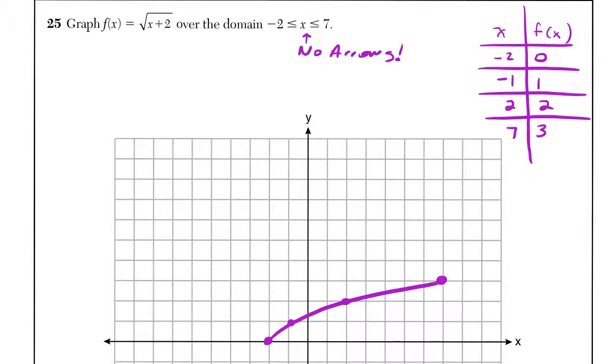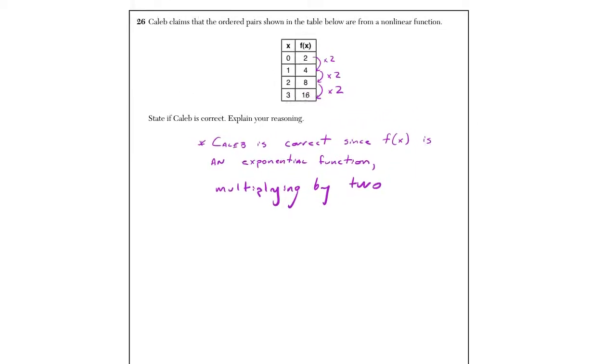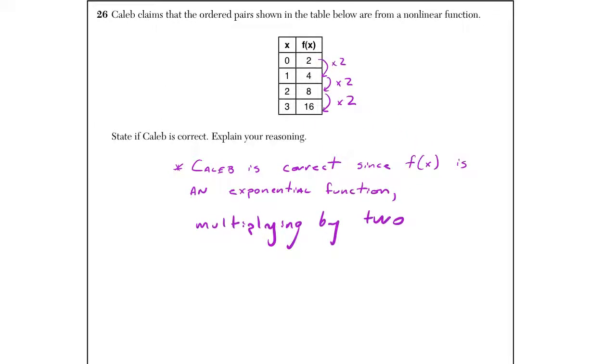Putting arrows would result in a 1 out of 2 here. Any other little slight mistake, plotting a point off slightly, would also result in a 1. Anything else here would be a 0 out of 2. And next question we're going to look at. For 26, it says, Caleb claims that this is a nonlinear function. Is Caleb correct?